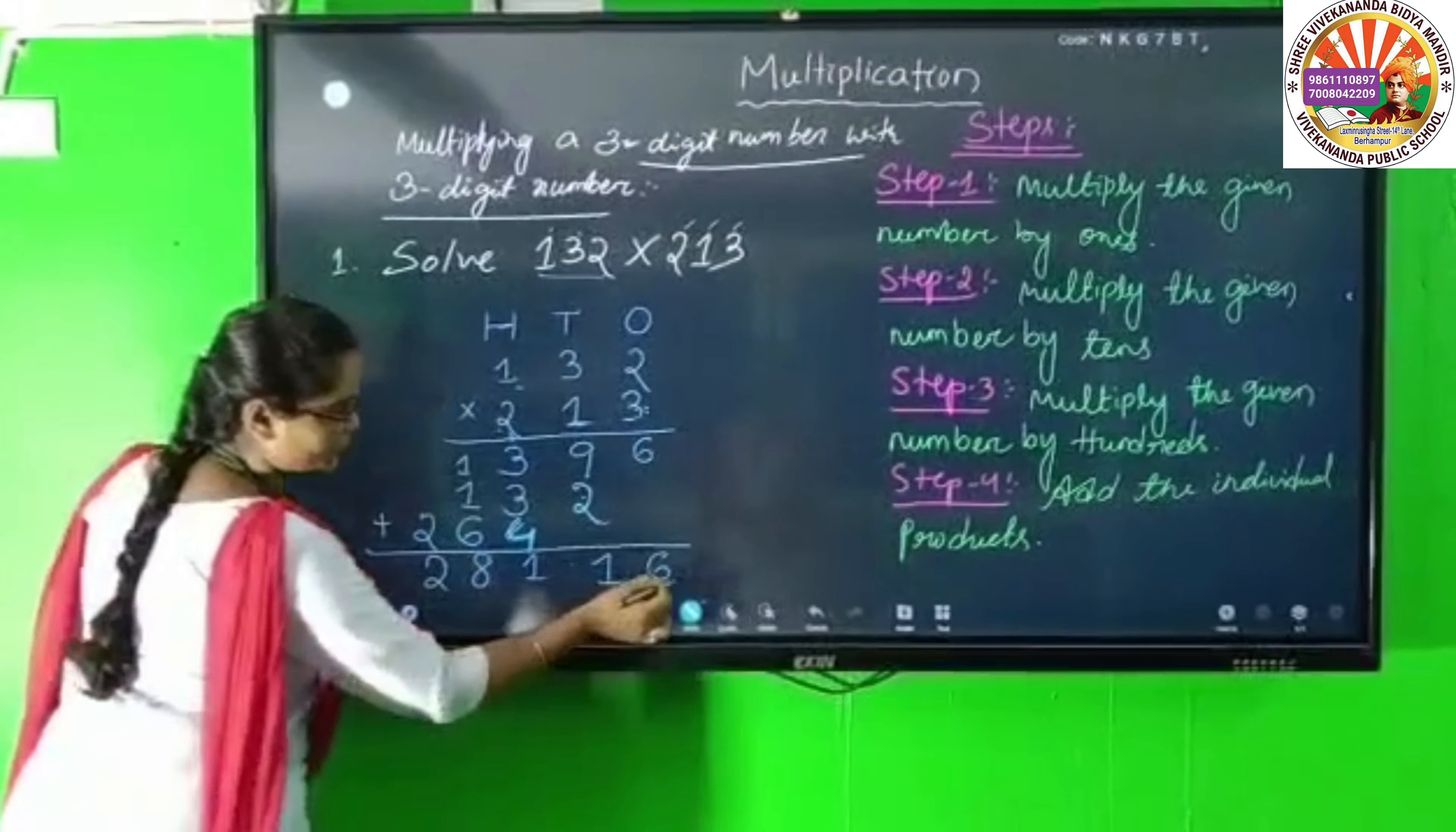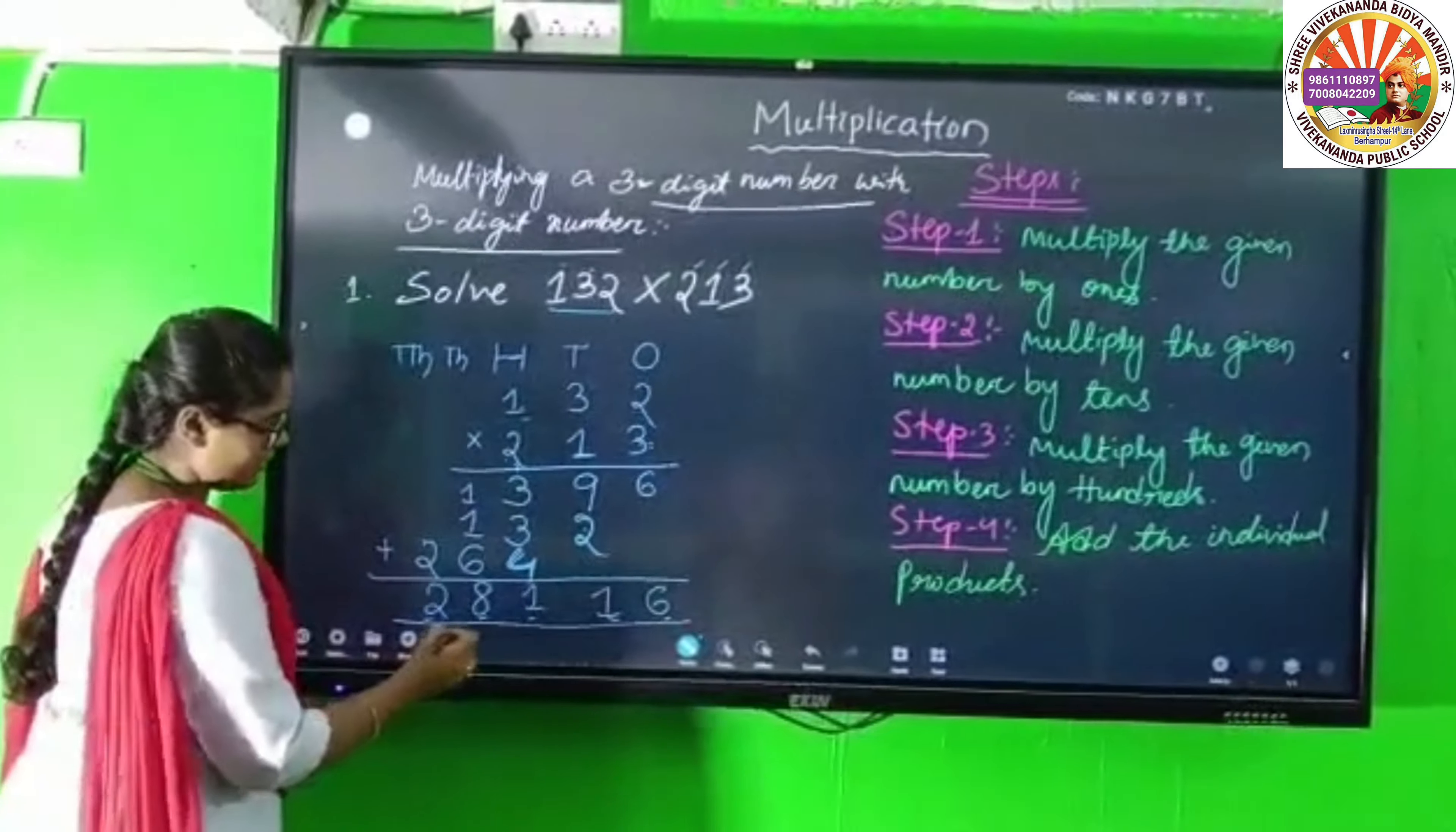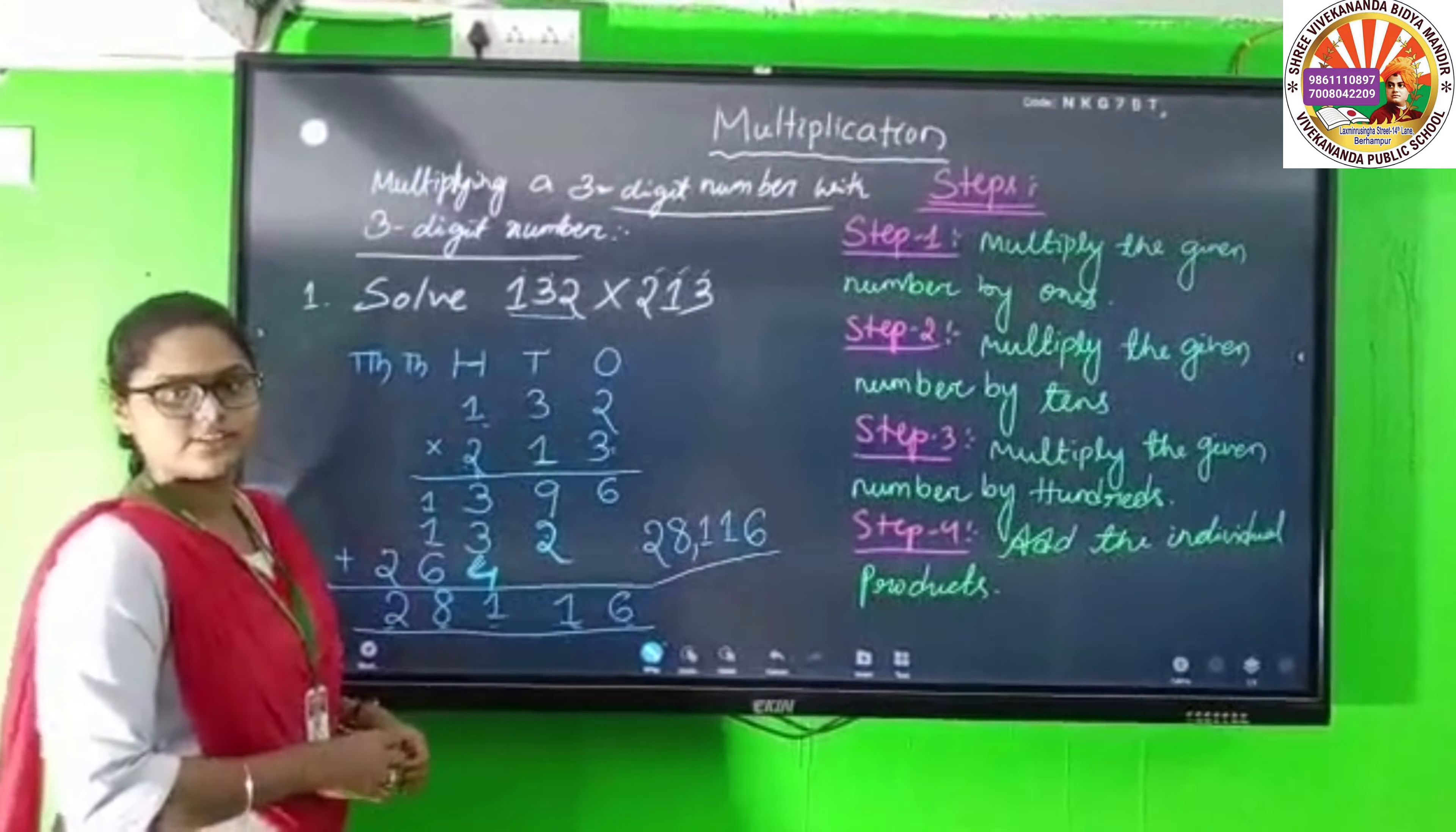We have 2 and 2. Here I have ones, tens, hundreds, thousands, and ten thousands. Our product is 28,116. The answer is 28,116.